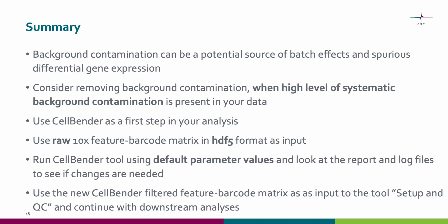To summarize what we have learned: clustering is a fairly robust method to CellBender background removal. However, especially when a high level of contamination is present, it can be a source of batch effects and spurious differential gene expression. Consider removing background contamination when a high level of contamination is present in your data. Use CellBender as a first step in your analysis and use a raw 10x feature barcode matrix in HDF5 format as input. Run CellBender using defaults first and look at the report and log files to see if changes to the parameter values are needed. Use the new CellBender filtered feature barcode matrix as input to the Setup and QC tool and continue with downstream analyses including filtering, dimensionality reduction, and so on.